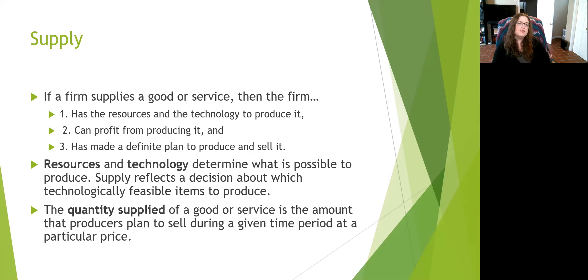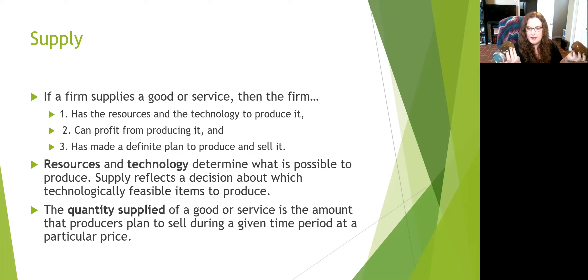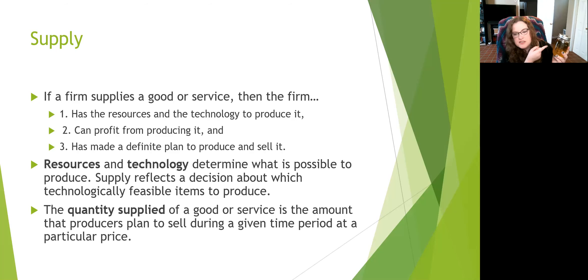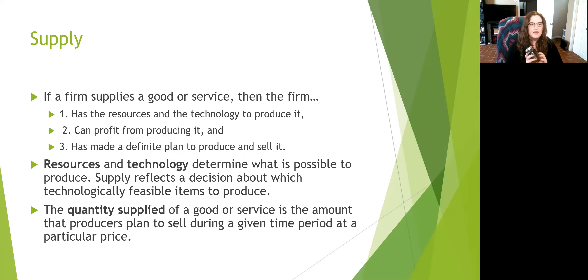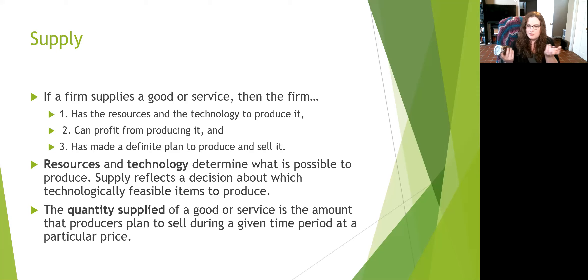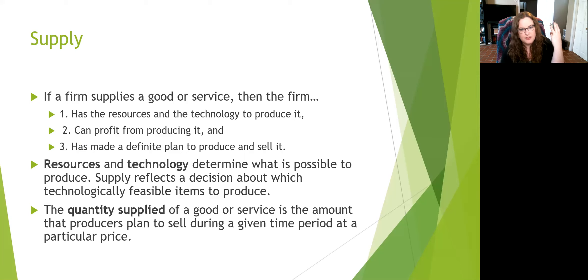I make it equal between the two — makes it easy to remember. If a firm supplies a good or service, then the firm: one, has the resources and technology to produce it; two, can profit from producing it; and three, has made a definite plan to produce and sell it. Let's say I'm making my jalapeno jelly. I have the resources and technology to make this. It doesn't cost me much to make, I could profit from producing it, and that means I have a definite plan to produce and sell it — for $2 a pop. Resources, profit, plan.